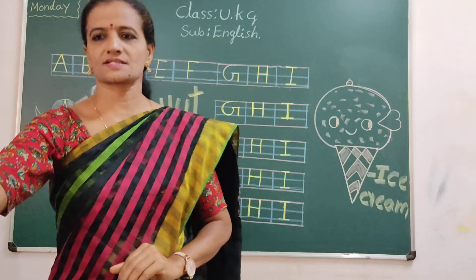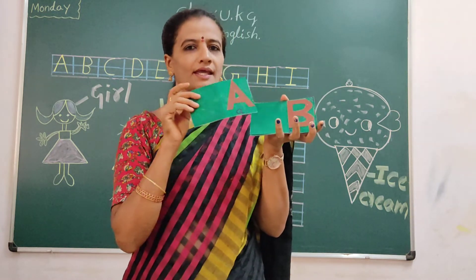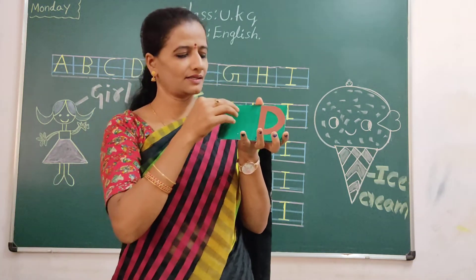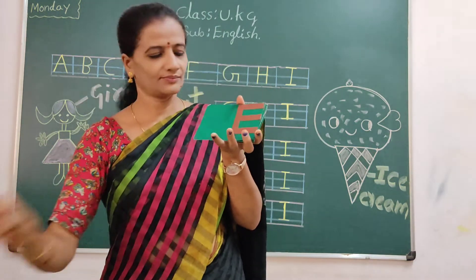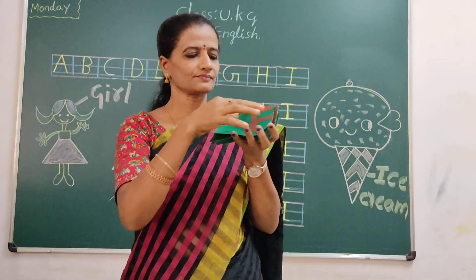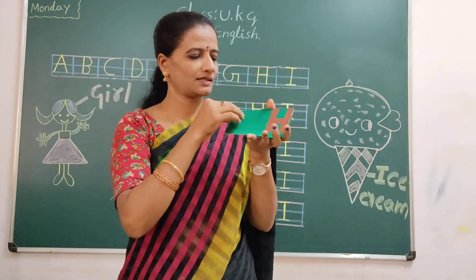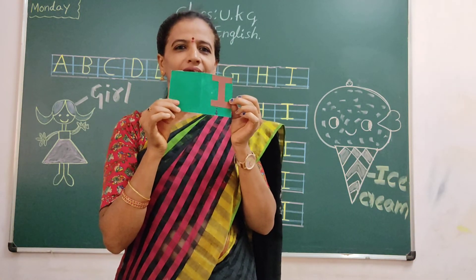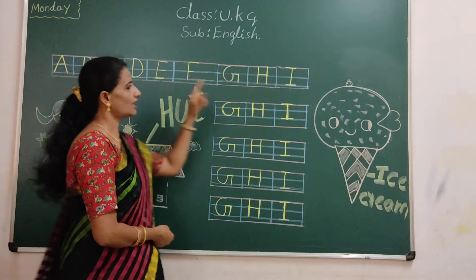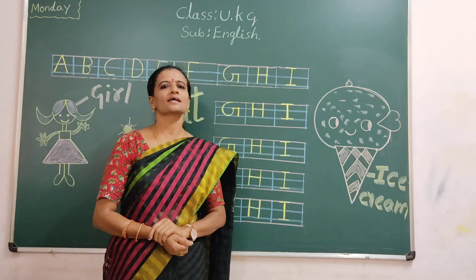Now I will show you flash cards. What is this letter, children? A. B. C. D. E. F. G, H, I. Okay. Everyone write nicely, clearly — A to I. Understood? Everyone say and write nicely and clearly. See you in the next class. Thank you, children.